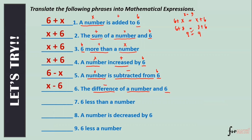Next: 'The difference of a number and six.' Difference means minus. A number and six — we have x minus six, as is. Number seven: 'Six less than a number.' Six less than — minus again. Like 'six more than a number,' when you see 'less than,' put the number first. So we have x minus six. Number eight: 'A number is decreased by six.' Minus again, by six. We have x minus six.